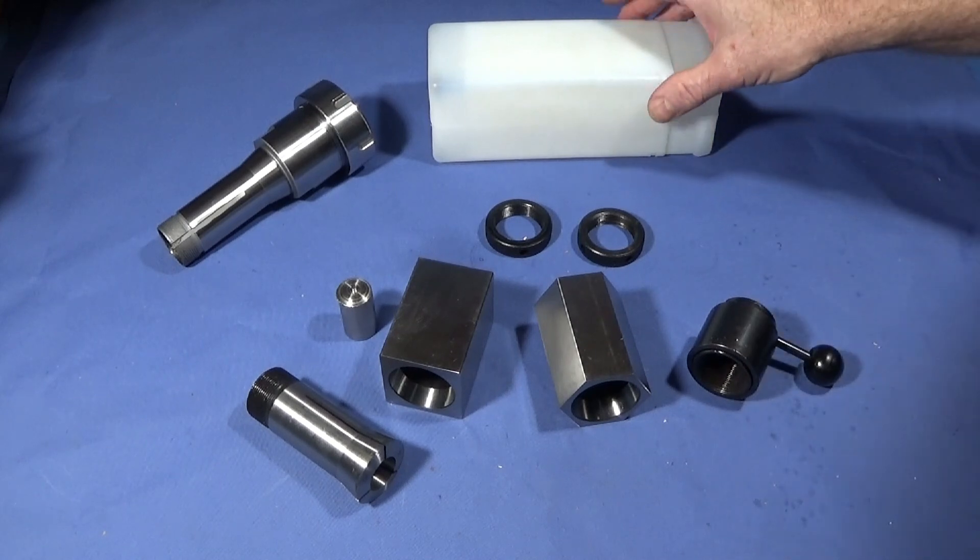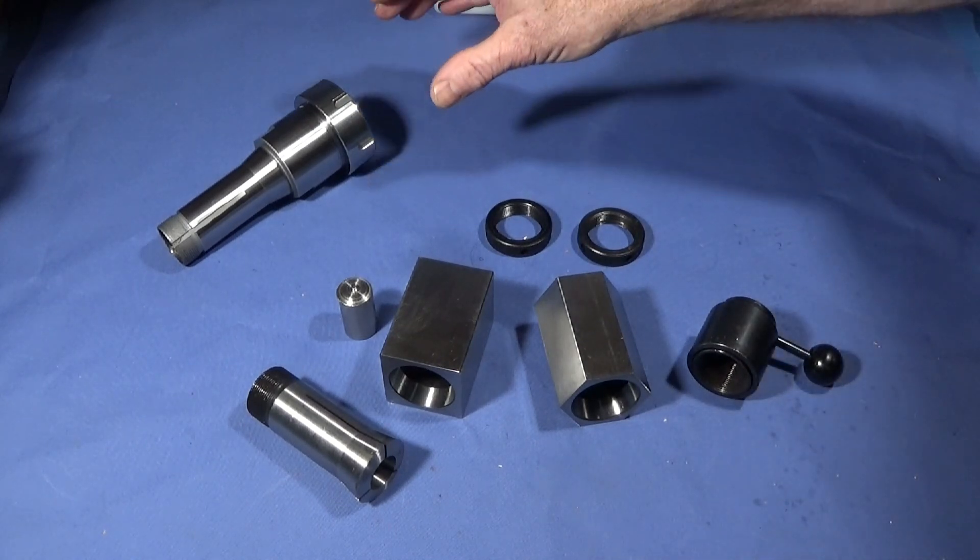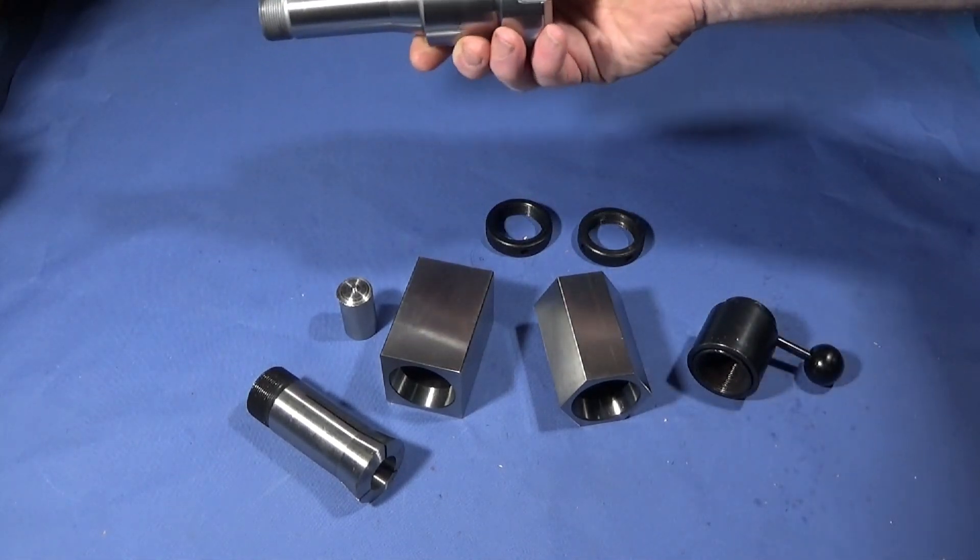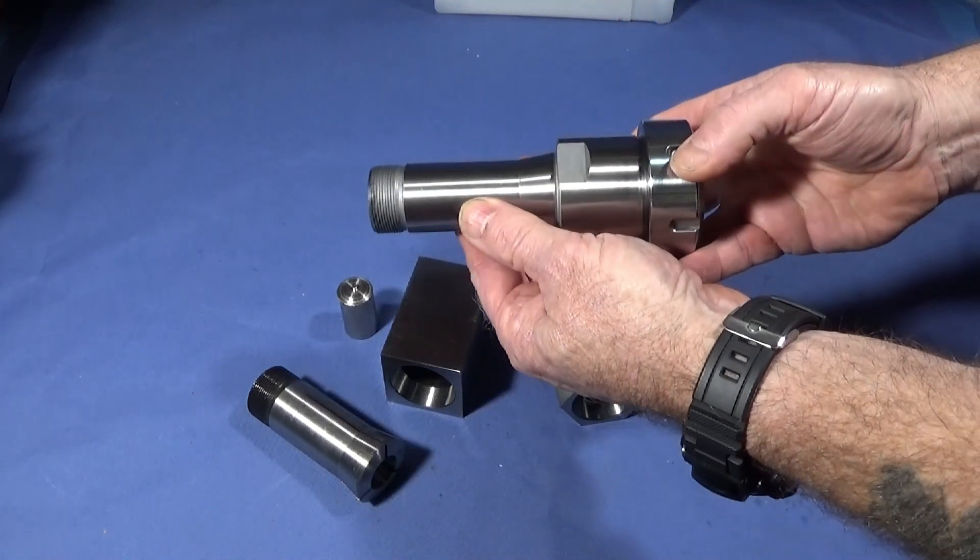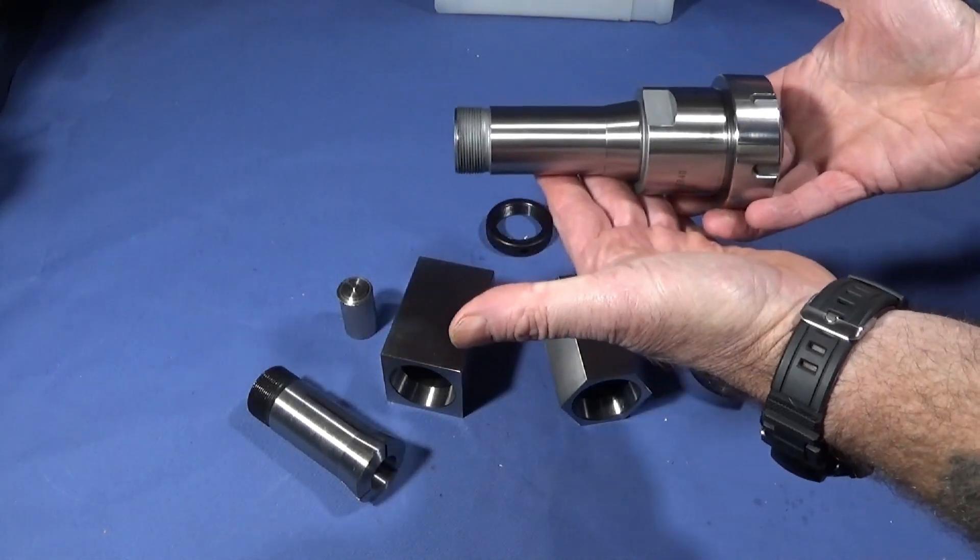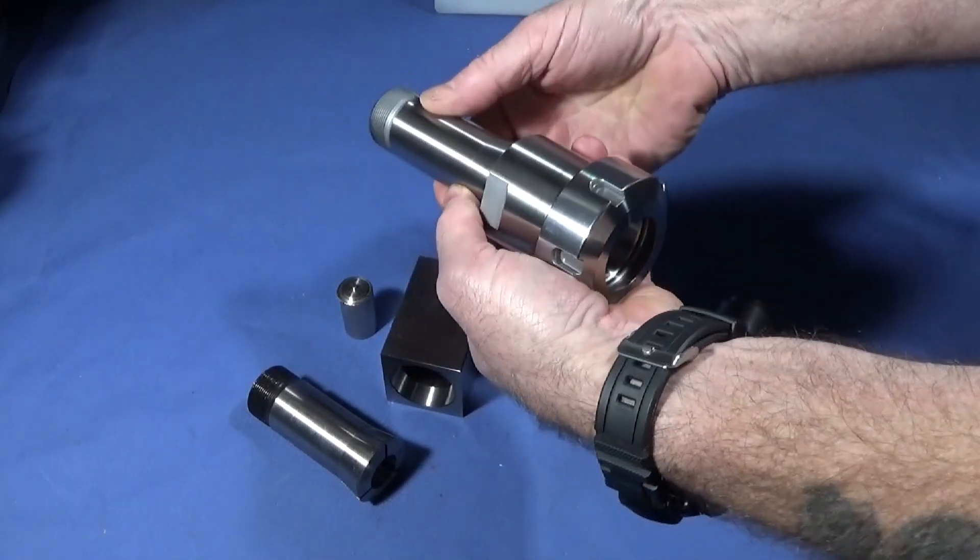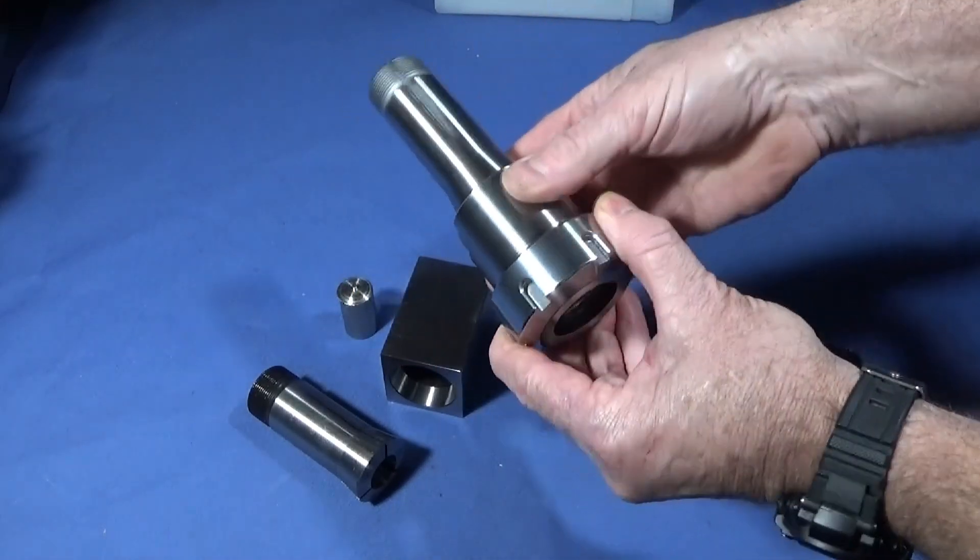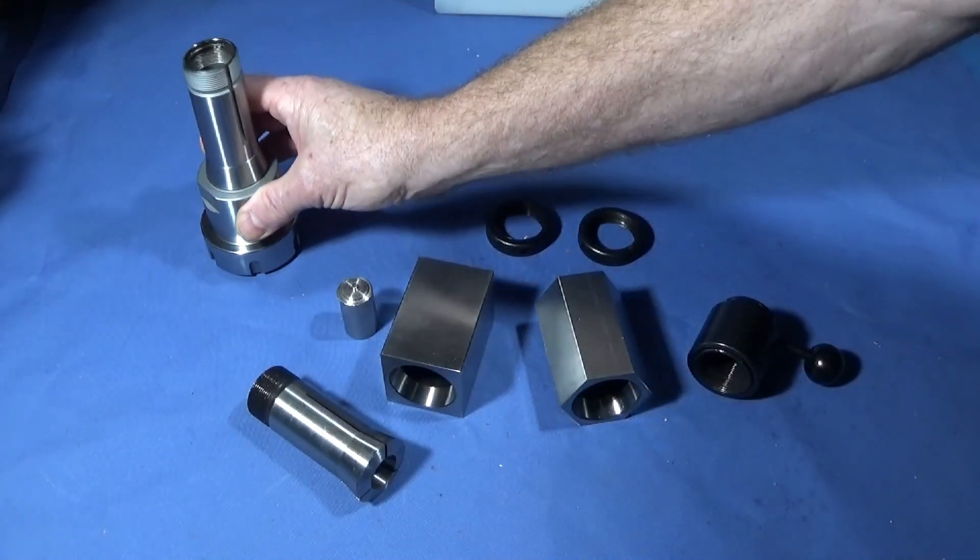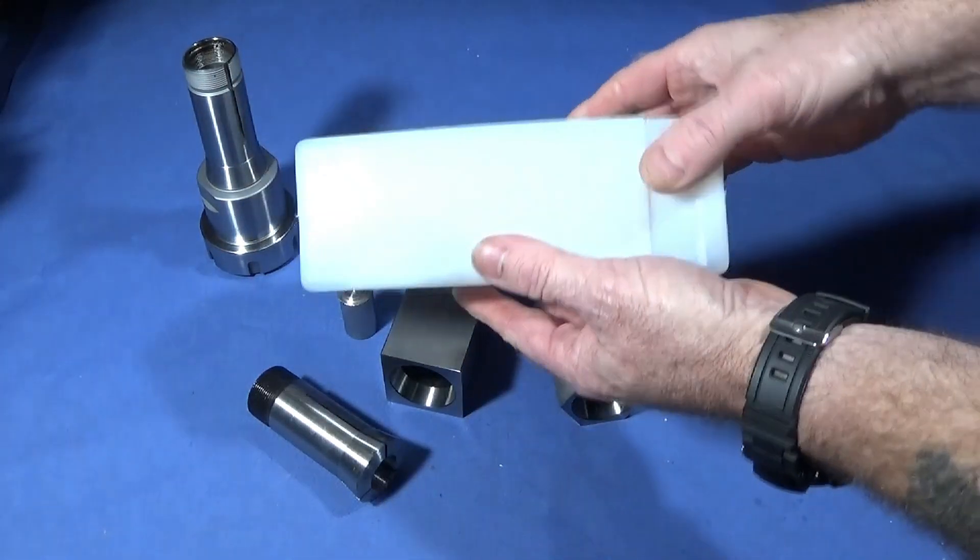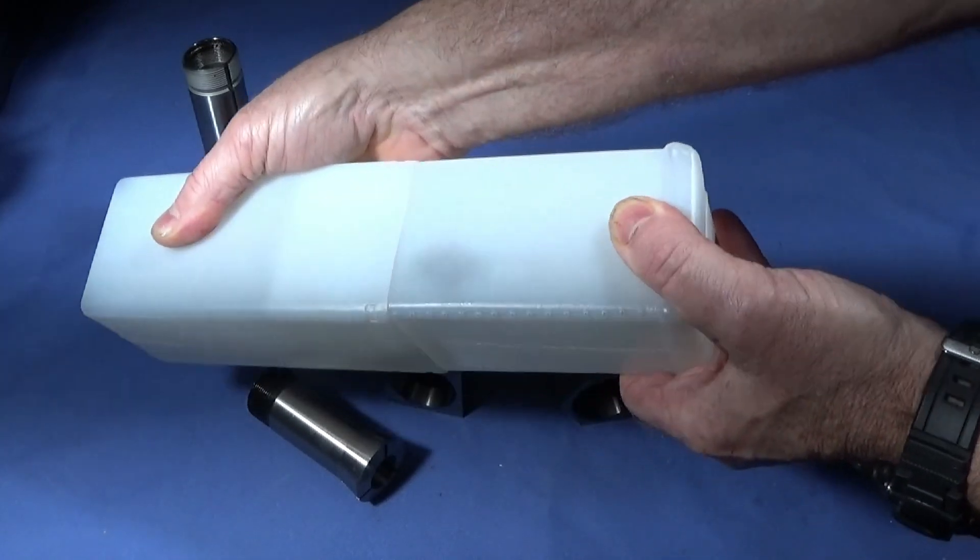A little while ago I showed that I had a 5C collet chuck which I got from Banggood on my Myford ML7. This one can actually be used straight into that collet chuck to use my ER32 collets in it, which makes it all the more versatile. It comes in this really nice plastic box to keep it safe when not in use.